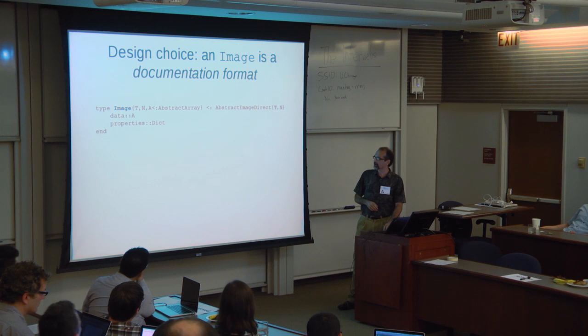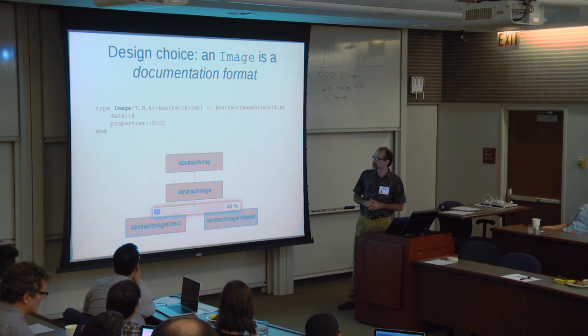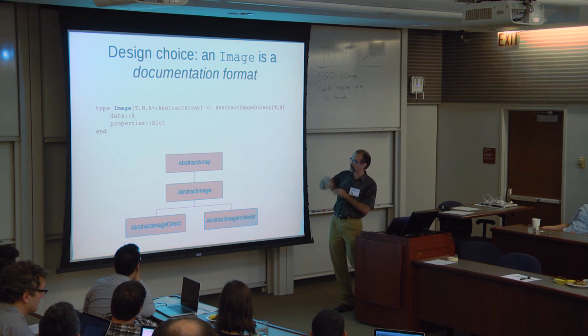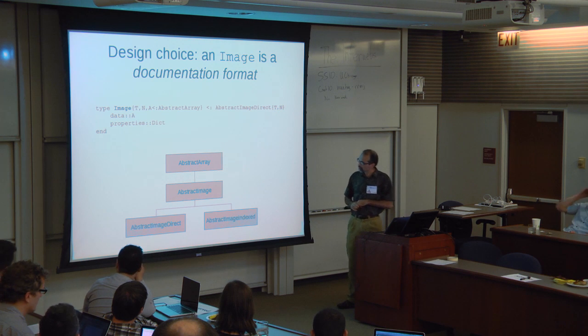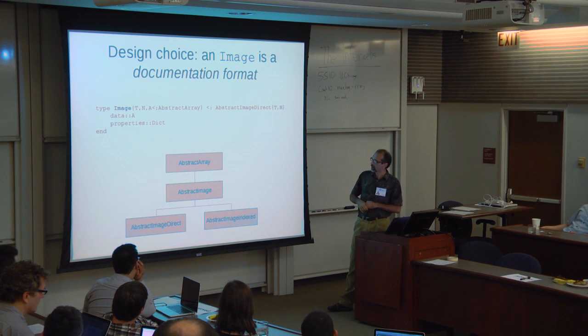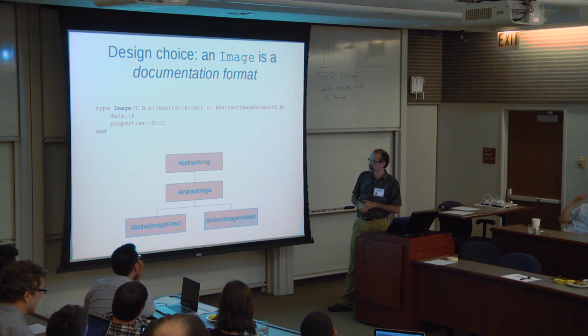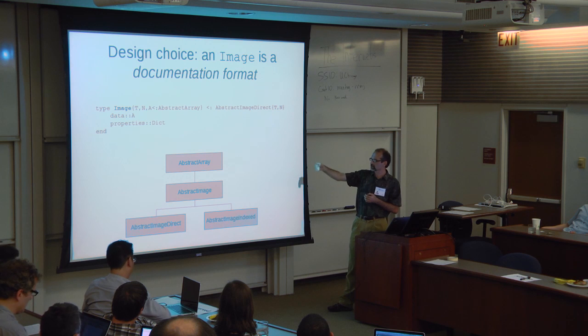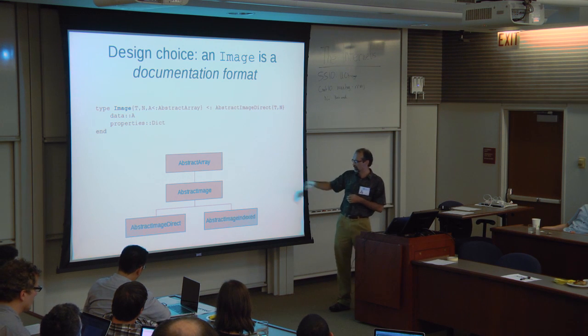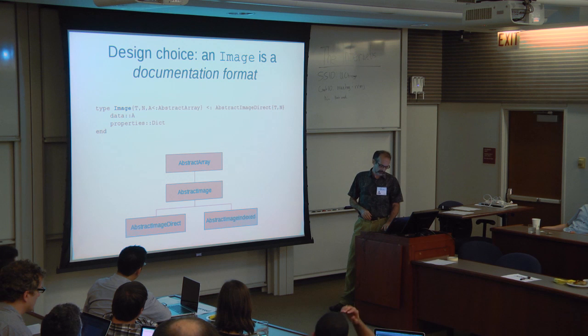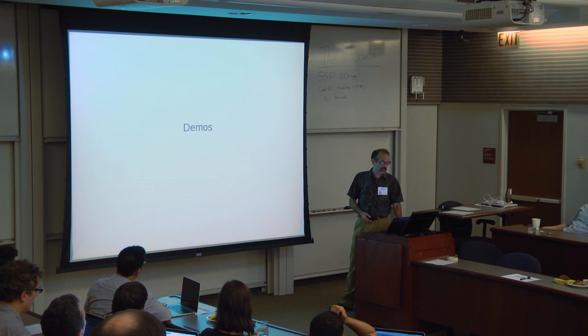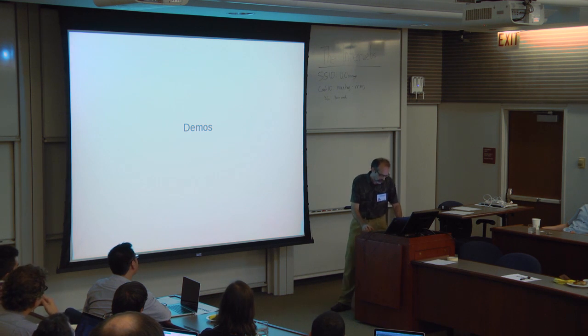So this is actually a very non-Julian design because you can't do multiple dispatch on a property dictionary. But I think because it's very hard to predict the number of different types of images that people will be using, I found that I was very unsuccessful in being more prescriptive about that. There is a little bit of a hierarchy, type hierarchy inside of images. It's very simple. Images descend from an abstract array. And you can just use arrays as images. You actually don't have to encapsulate them in any type. And the algorithms of the images packages just work.